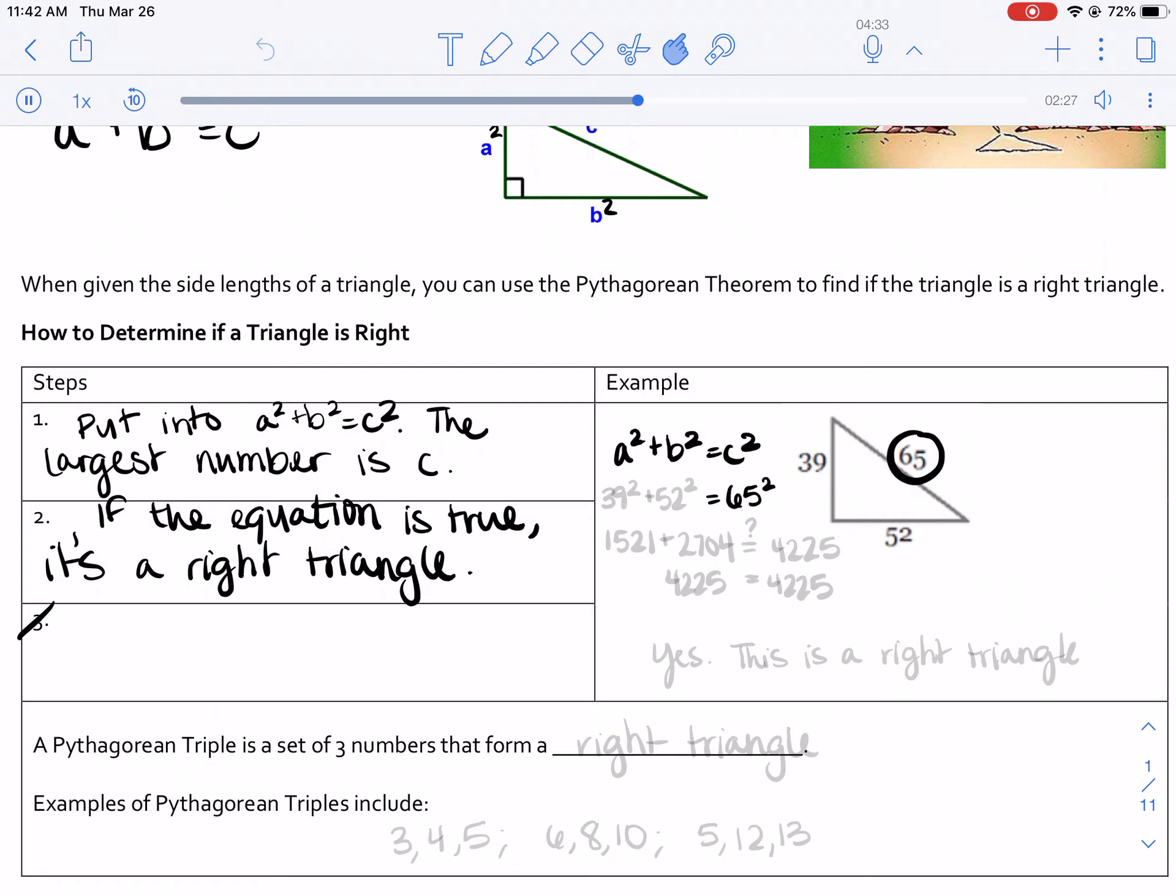And remember, the other two numbers can be either a or b. Because they're being added together, it doesn't really matter which order you put them in. So I'm going to put them in like this.